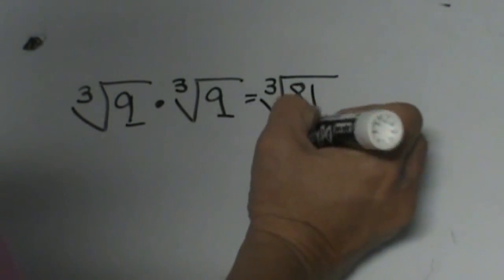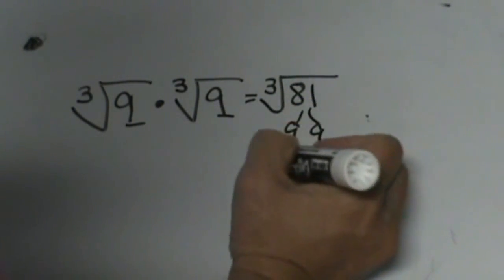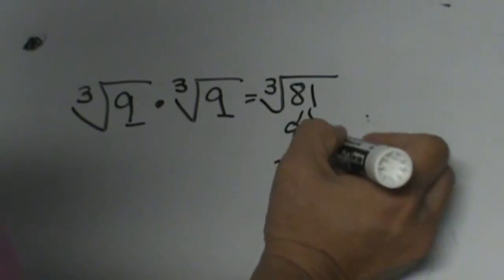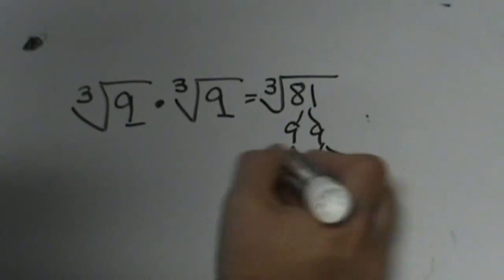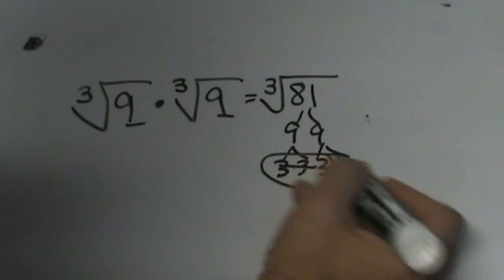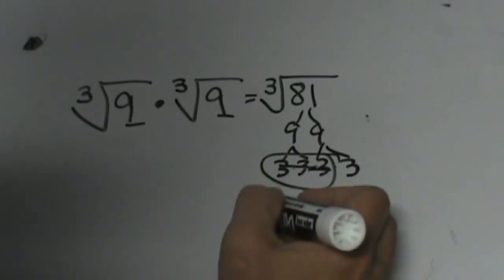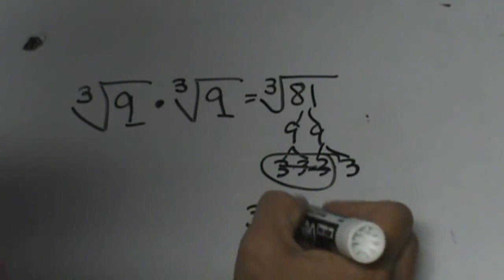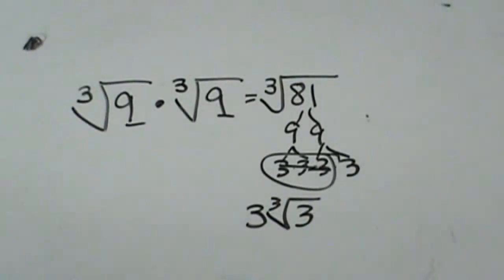And then we know that 81 is just 9 times 9, and that is 3 times 3 times 3 times 3, and then I can take a group of 3 out. So that ends up being 3 cube root of 3, and there you go.